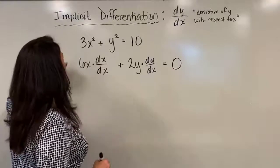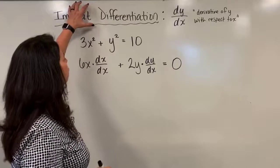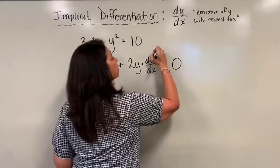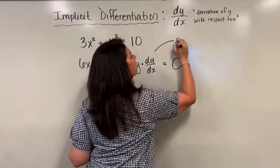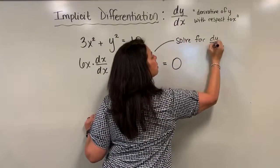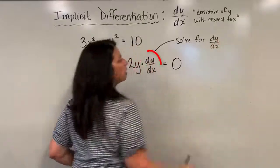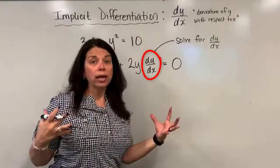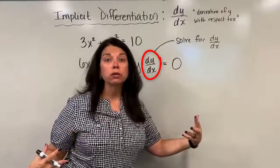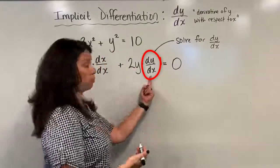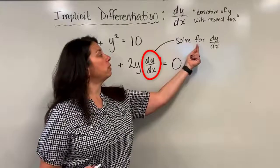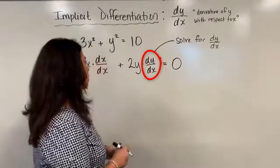Our challenge when we're trying to find the derivative implicitly is we ultimately want to solve for dy over dx in our problem. What's going to happen is our equation will have these dy over dx terms sprinkled all over the place. Luckily we only have one of them. But the challenge for us is we want to eventually solve for that dy over dx.